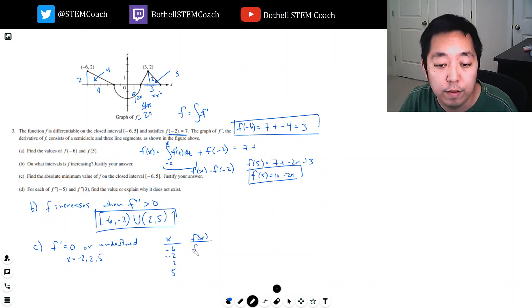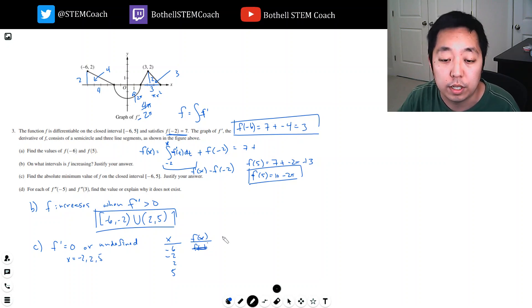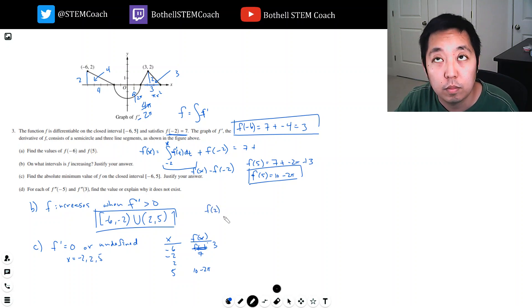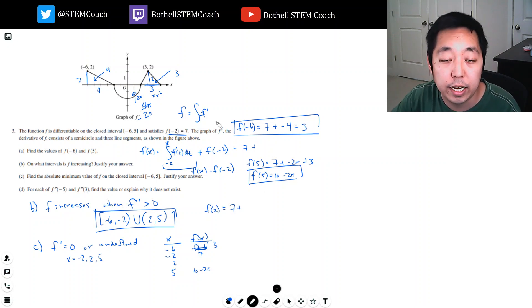And then I just want to compare which one's the smallest. The minimum has to occur either at a local minimum, which is what the critical numbers would give you candidates for, or it has to occur at the endpoints. Those are the two scenarios. So negative six and five are endpoints, negative two and two are critical numbers. Now we're going to evaluate. Well, f of negative six we already solved. It was three. And we also computed f of five, which was 10 minus two pi. f of negative two was given to us. That's seven. Now f of two is the only one we hadn't computed yet. It's seven plus the area between here and here. So it's seven minus two pi.